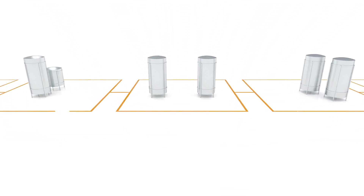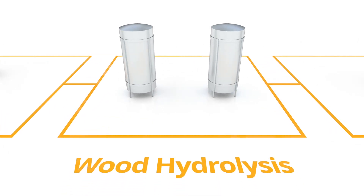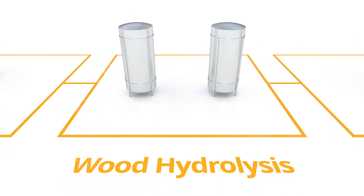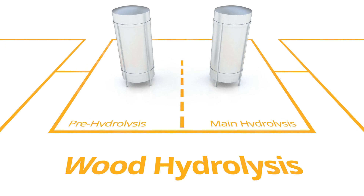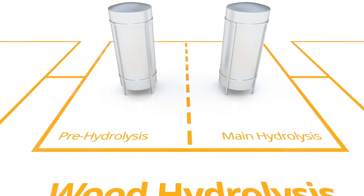The core of the Dawn Technology Process is the wood hydrolysis section. This takes place in two stages: the pre-hydrolysis and the main hydrolysis.